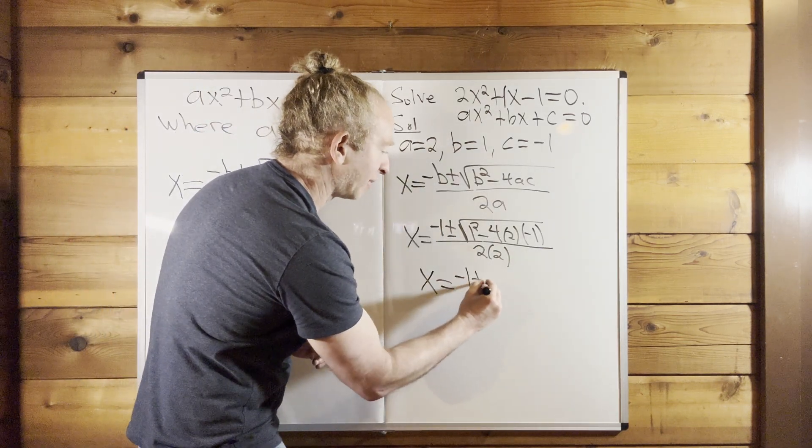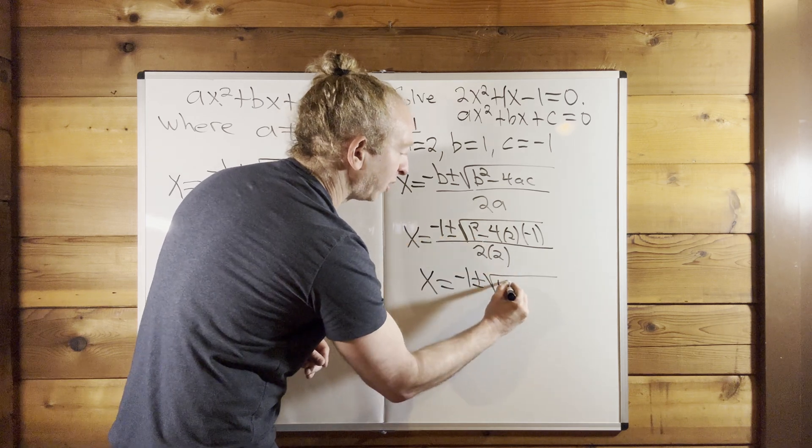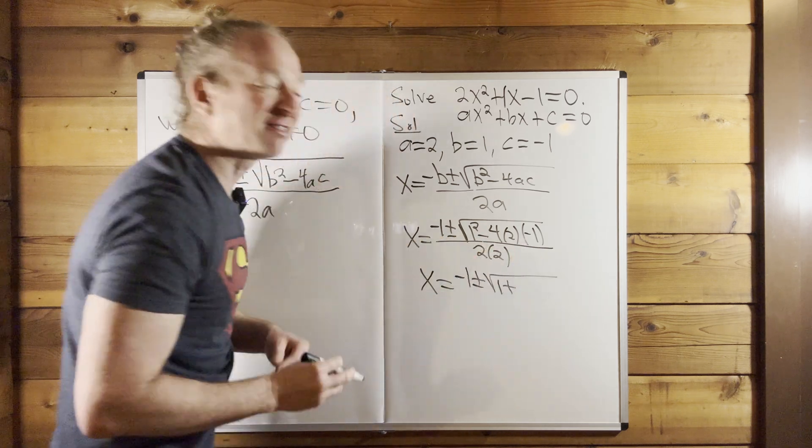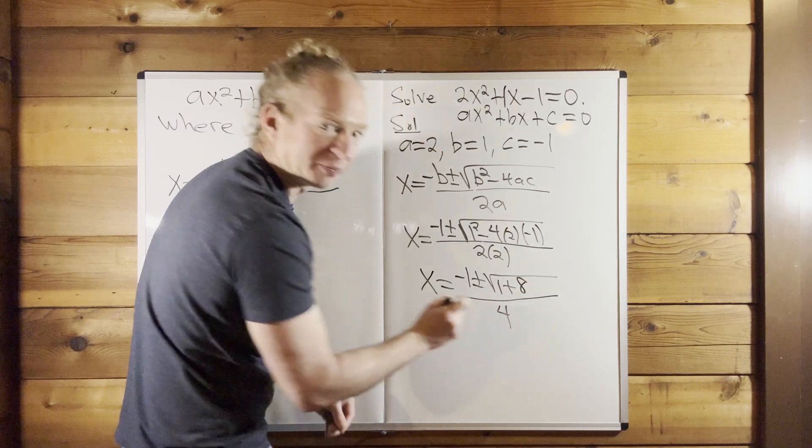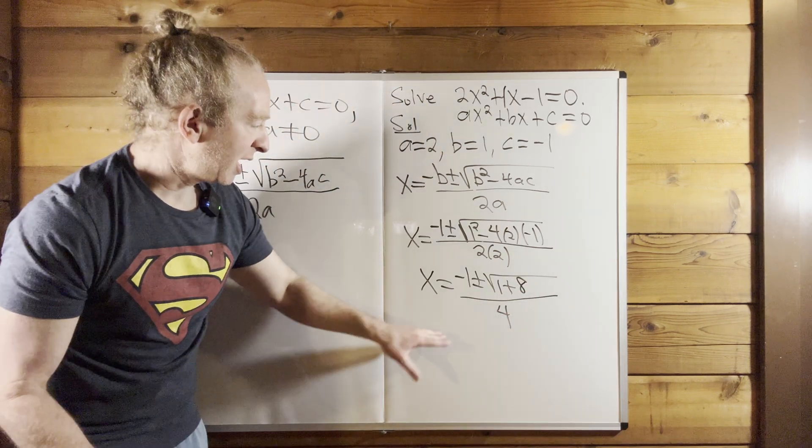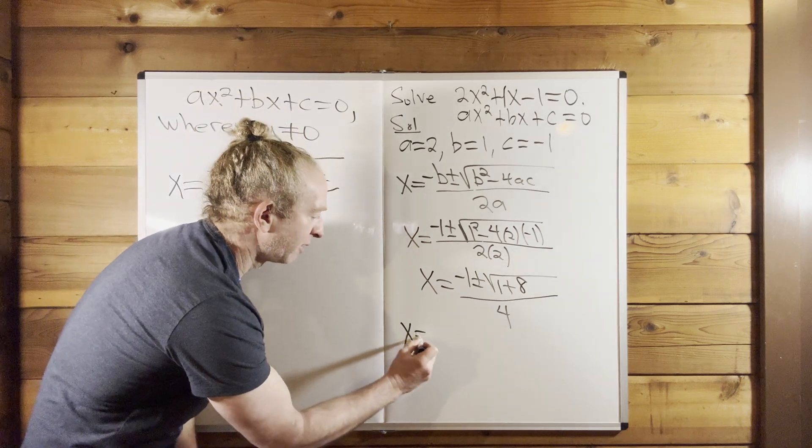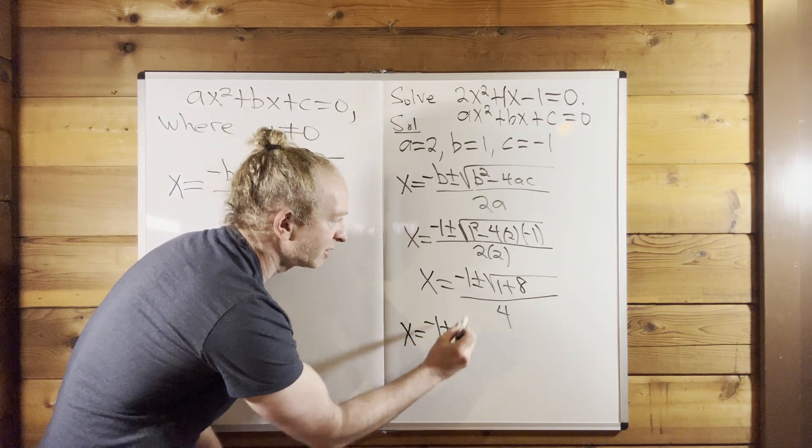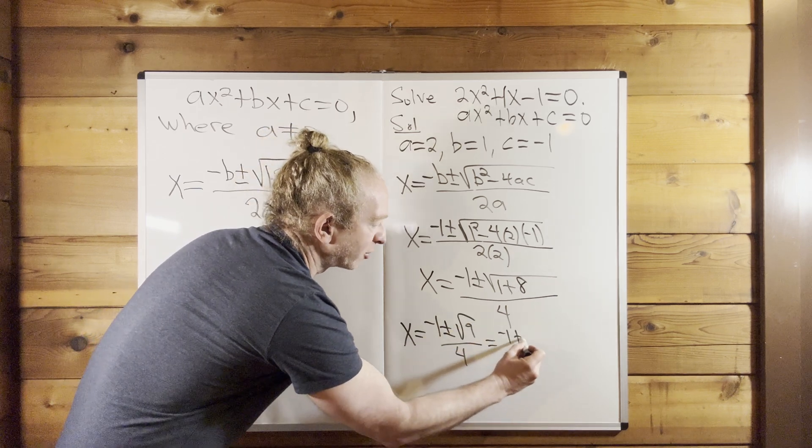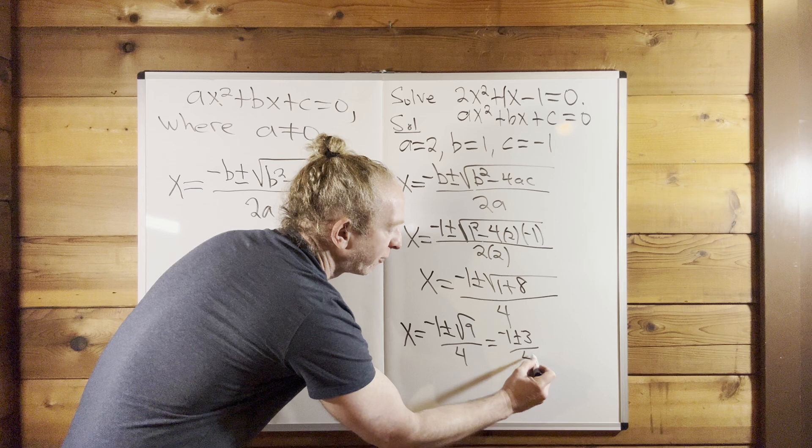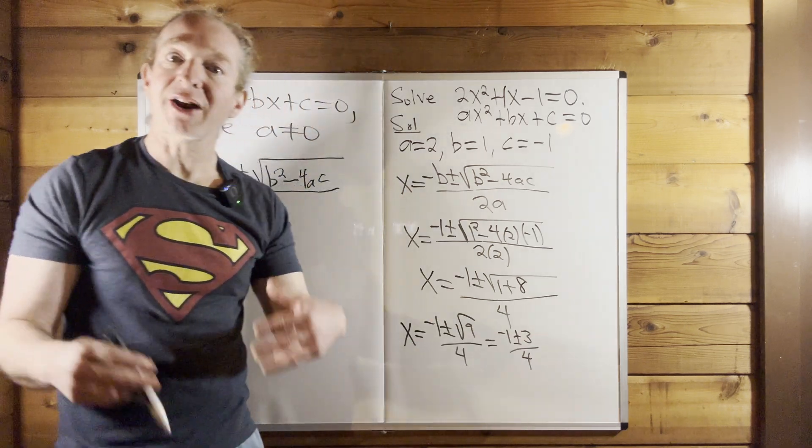This is negative 1 plus or minus the square root of 1 squared is 1. So this is 1 plus, right? Double negative plus 8. Oh, this is cool. This worked out really nice. 2 times 2 is 4. And so 1 plus 8 is 9. So this gives us x equals negative 1 plus or minus the square root of 9 over 4, which is negative 1 plus or minus 3 over 4.